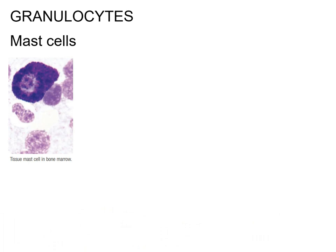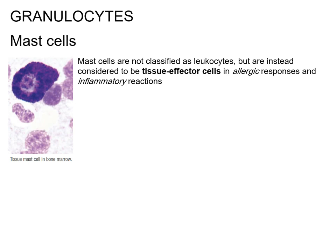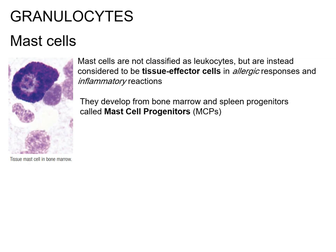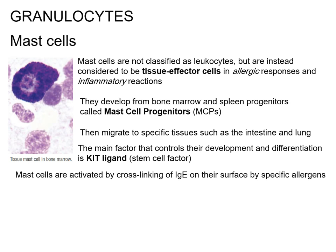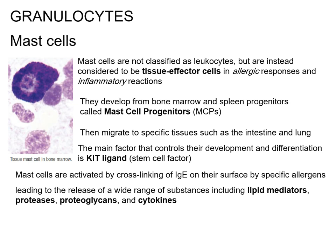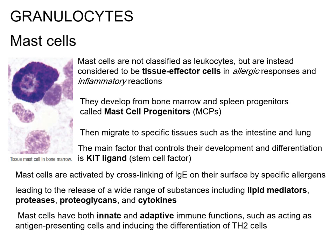Mast cells are not classified as leukocytes but are instead considered tissue effector cells in allergic responses and inflammatory reactions. They develop from bone marrow and spleen progenitors called mast cell progenitors, which migrate to specific tissues such as the intestine and lung. The main factor controlling their development and differentiation is KIT ligand. Mast cells are activated by cross-linking of IgE on their surface by specific allergens, leading to the release of lipid mediators, proteases, proteoglycans, and cytokines. They can also be activated independently of IgE to cause inflammatory reactions. Mast cells have both innate and adaptive immune functions, such as acting as antigen-presenting cells and inducing differentiation of Th2 cells, and can have both pro-inflammatory and anti-inflammatory effects.